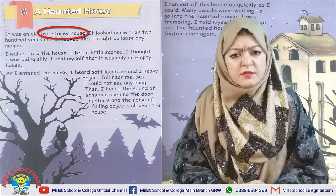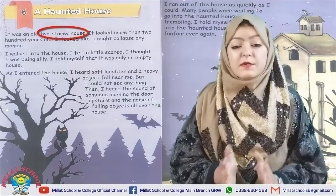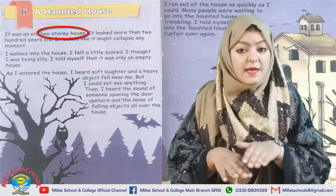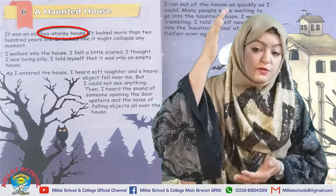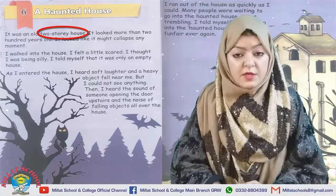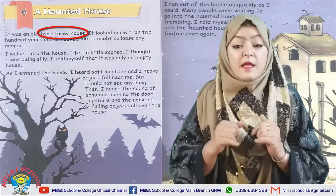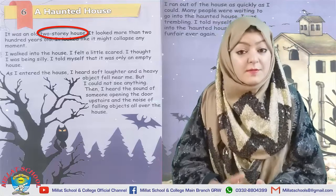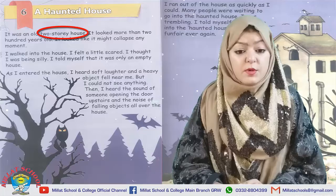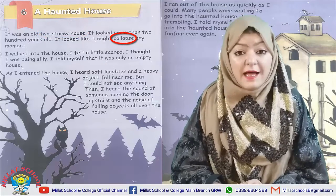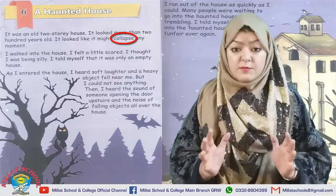The next unfamiliar word is 'two-story building.' Two-story buildings are those buildings which have more than one floor. When we enter any building, we enter on the ground floor. The next word is 'collapse.' Underline 'collapse.' Collapse means when something suddenly falls down.